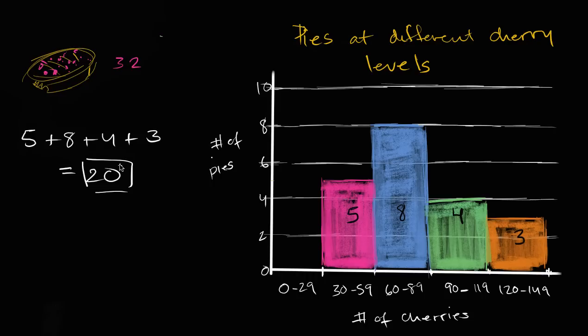But then you can ask more nuanced questions. What if you wanted to know the number of pies with more than 60 cherries? The number of pies with more than 60. So number of pies with, let's say 60 or more. 60 or more cherries.